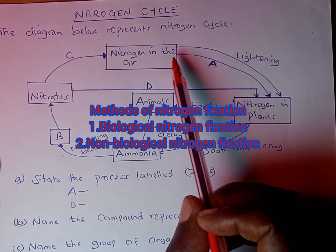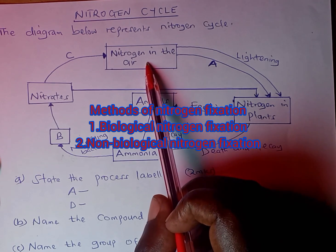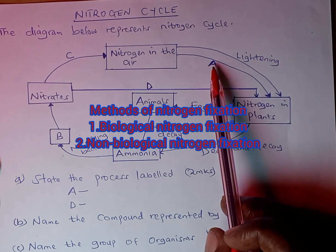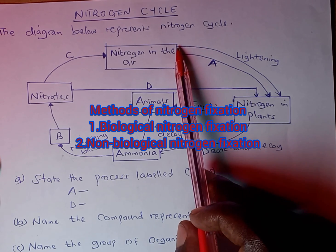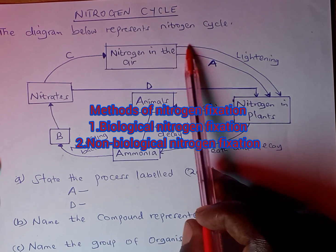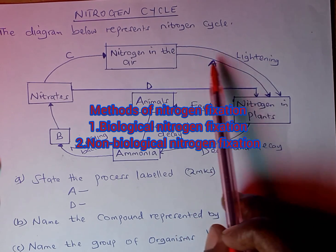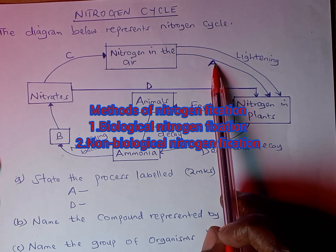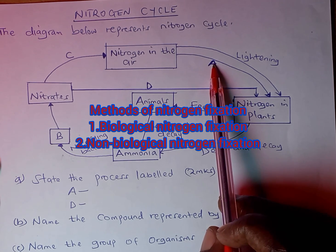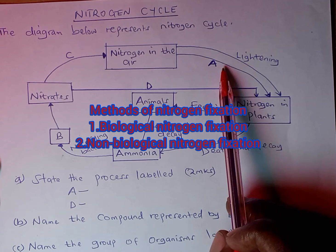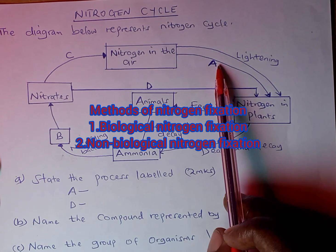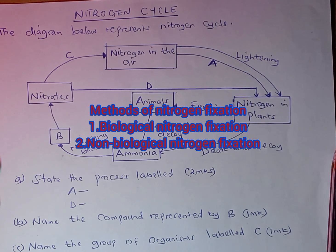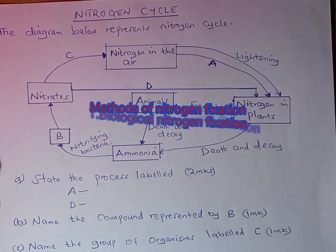We are going to look at nitrogen in the air moving into nitrogen in plants through two methods. We have nitrogen fixation through lightning, and also nitrogen fixation using the nitrogen-fixing bacteria such as Rhizobium and other microorganisms that are involved in this process.